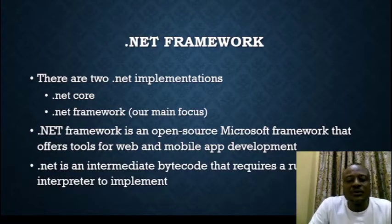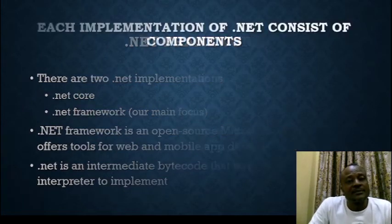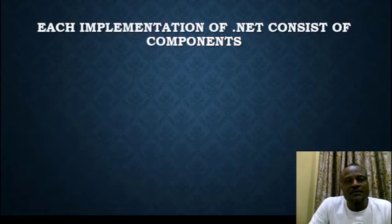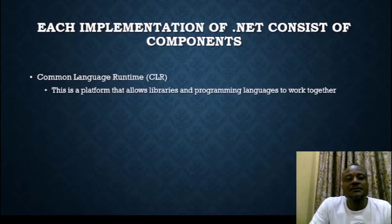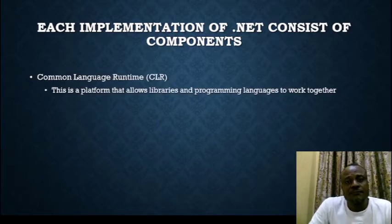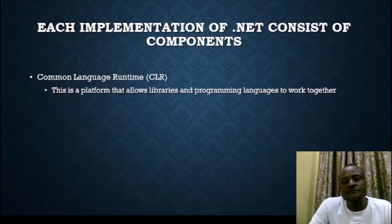.NET is an intermediate bytecode that requires a runtime interpreter to implement. Each implementation of .NET consists of components. The first component is the Common Language Runtime (CLR), which is a platform that allows libraries and programming languages to work together. Each language comes in, pulls from the library, you build your application, and it compiles and runs seamlessly.